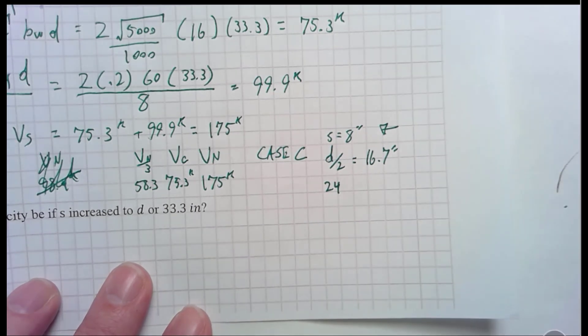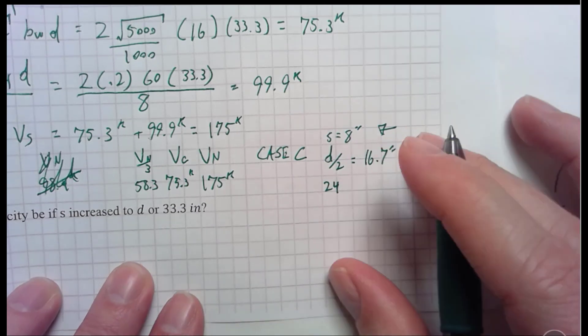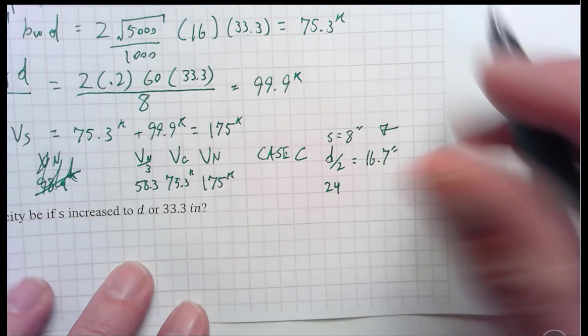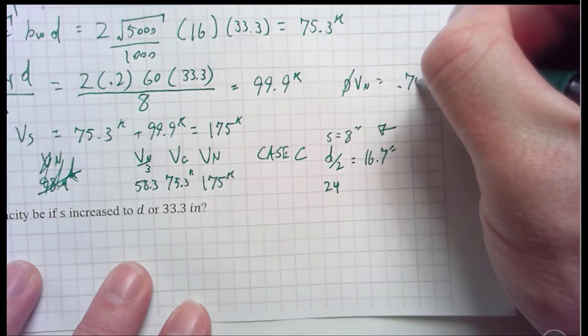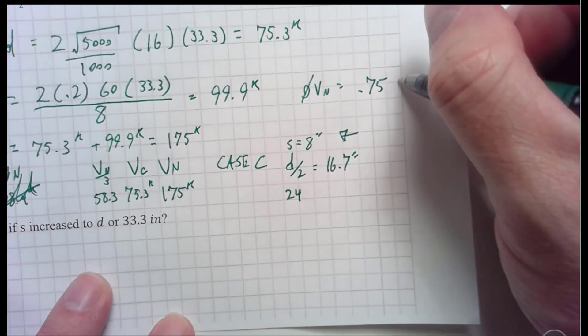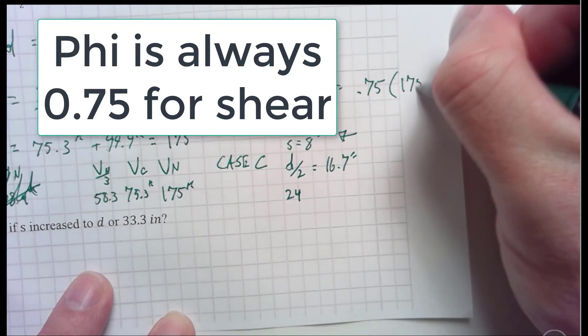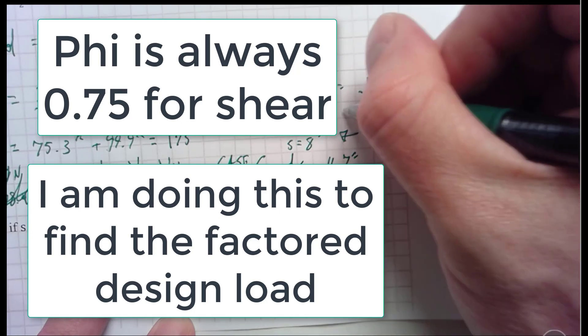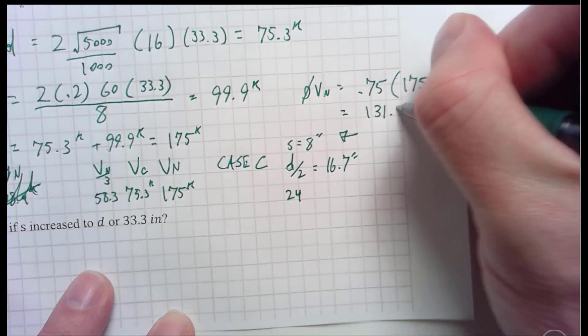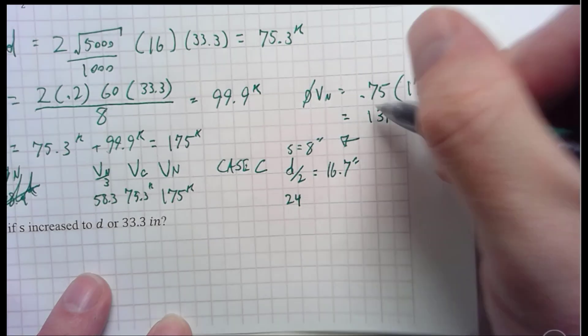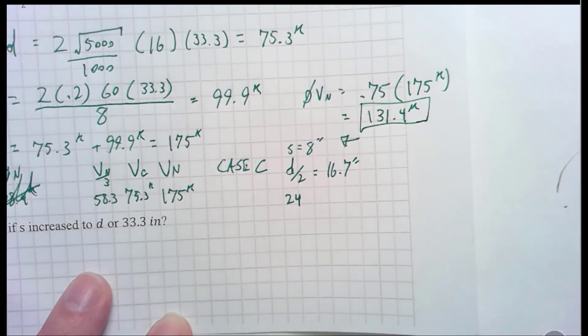But I have to use my phi factor to find my true capacity, at least the capacity that I'm able to design for. I'm going to take my phi Vn, which is equal to 0.75 times 175 kips. And that is equal to 131.4 kips. And now that is my capacity of that member.